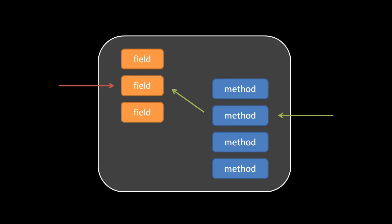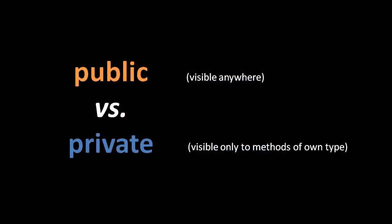When you fail to adhere to the principle of encapsulation, data in your code easily ends up getting read and written from all different places. The result is what we call spaghetti code — code which is extremely difficult to understand, and therefore very difficult to fix and modify. When adhering to encapsulation, we commonly make a distinction between public and private members of a class. Public members are visible anywhere; private members are only meant to be accessed by methods of the same class. Strictly following encapsulation, all fields should be kept private. Methods may be either private or public. Static languages actually prevent private members from being read or written outside their class, while dynamic languages typically do not.